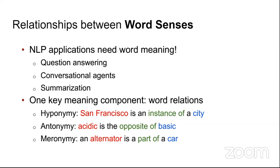The WordNet paper gives a detailed idea of what kinds of word relations exist. NLP applications need word meaning ranging from word sense disambiguation to translation, question answering, conversational agents, and summarization — everything needs a semantic representation. Without a proper semantic representation, your model for solving the problem is likely to fail.